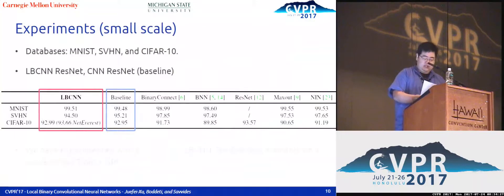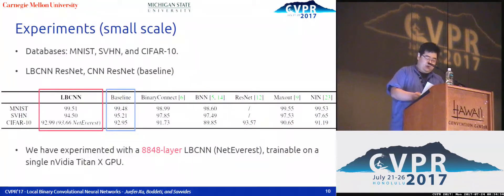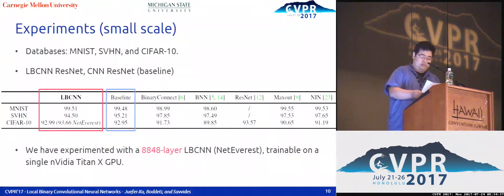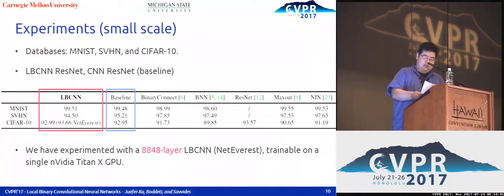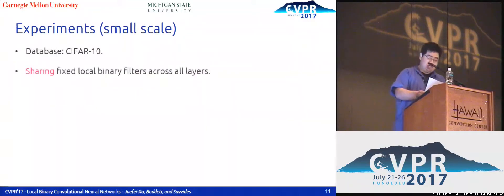The small-scale experiments are carried out on MNIST, SVHN, and CIFAR-10. Performance of ResNet with LBC layers is on par with the state-of-the-art. Moreover, with significant parameter savings, we are able to train LBCNN with over 8,000 layers on a single Titan X.